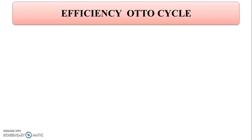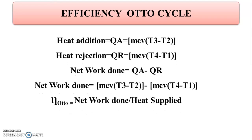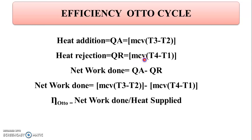Now we will derive the formula for efficiency of the Otto Cycle. Heat addition during process 2 to 3 is Qa equals mCv(T3 minus T2), where m is mass, Cv is specific heat at constant volume, and T3 minus T2 is the temperature difference. Similarly, heat rejection during process 4 to 1 is Qr equals mCv(T4 minus T1).